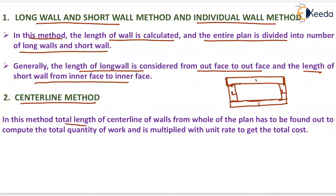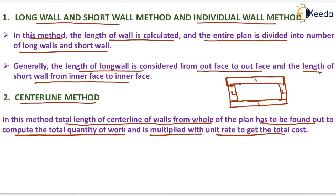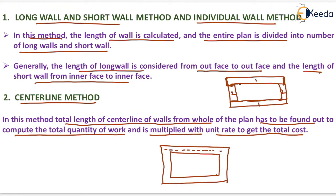In the centerline method, the total length of the centerline of walls from the whole plan is found to compute the total quantity of work, and is multiplied by the unit rate to get the total cost. Care must be taken at corners, because the corner area is counted twice but compensates for the area not included, balancing the calculation.